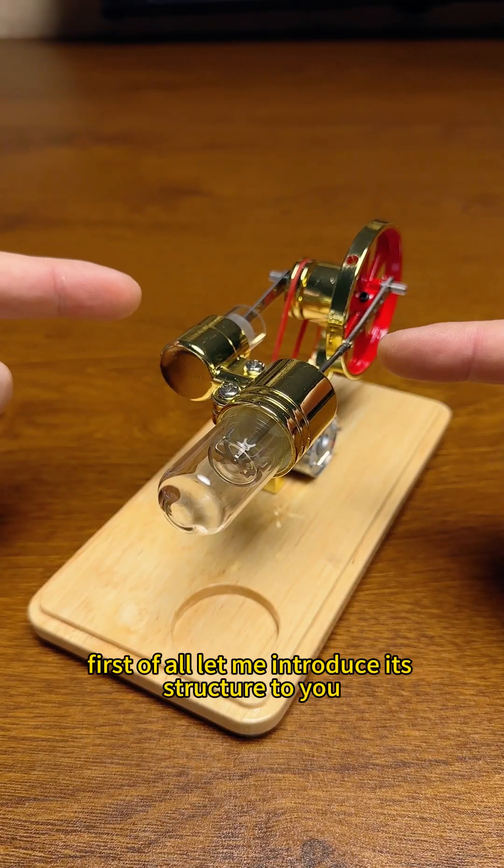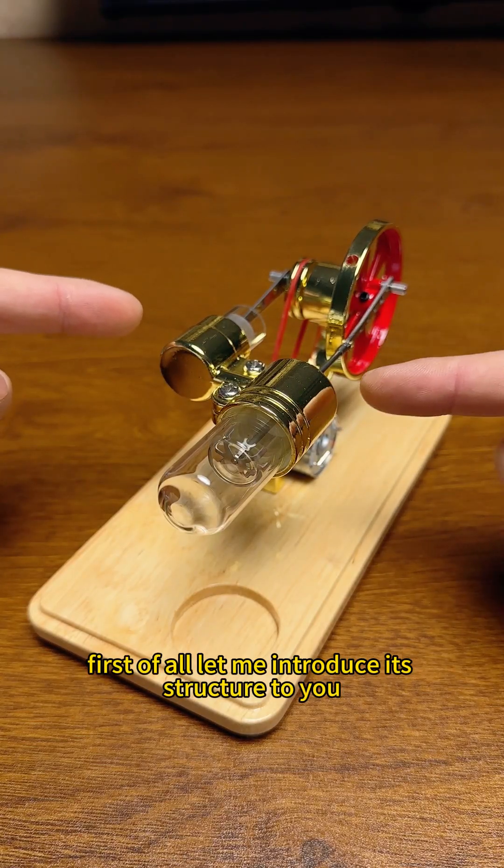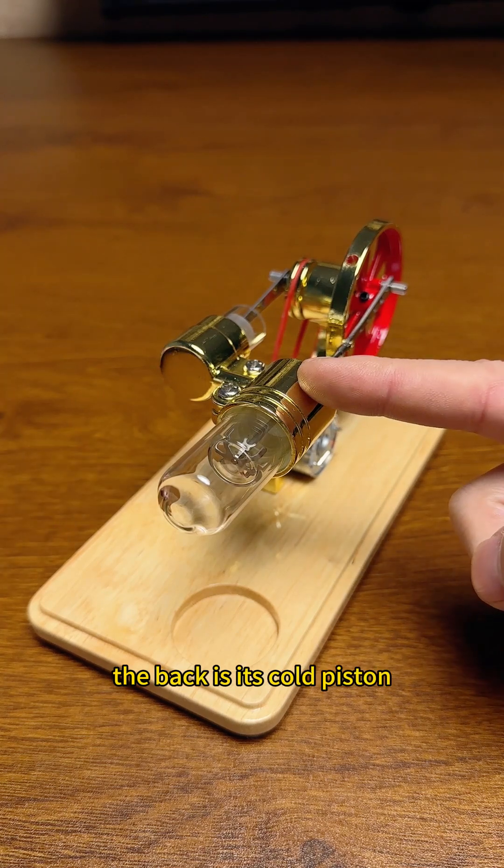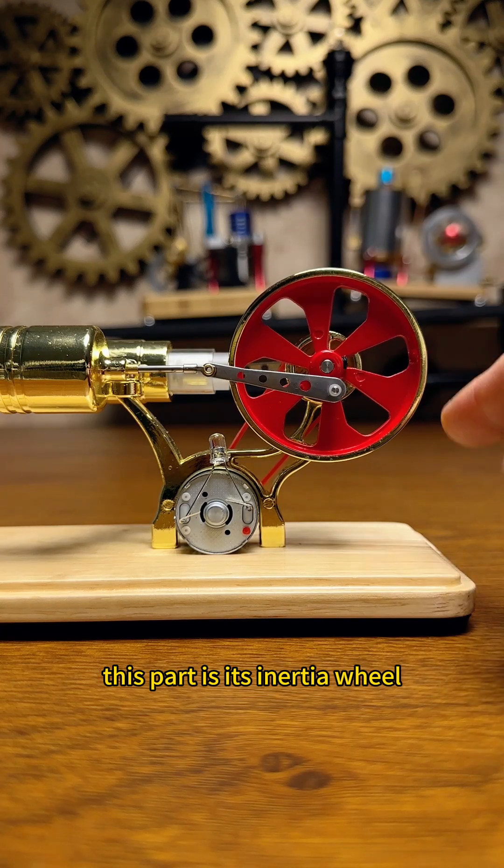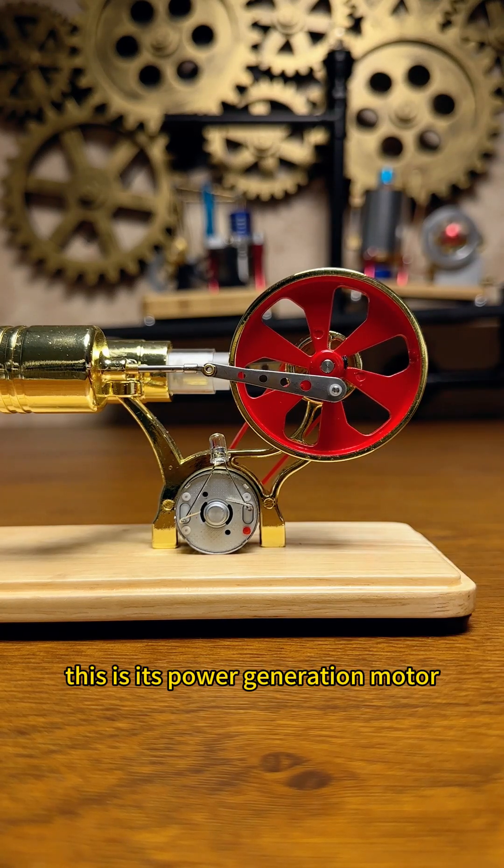First of all, let me introduce its structure to you. The front is its hot piston. The back is its cold piston. This part is its inertia wheel. This is its power generation motor.